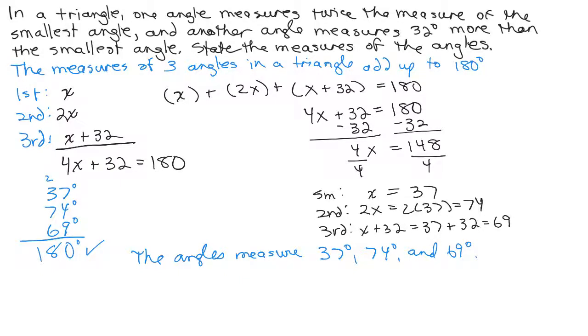Make sure that one really is twice as big as the other. Notice the small one's 37, and one of the angles was twice that measure. So I see 37 times 2 really is 74. It also says that one of the angles is 32 degrees more than the smallest, and I can check that. Is 69, 32 more than 37? And yes, it is. Make sure you answer the question being asked.